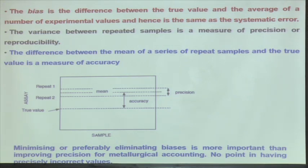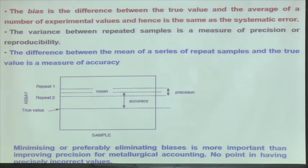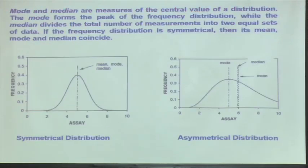Minimizing or preferably eliminating biases is more important than improving precision for metallurgical accounting. There is no point in having precisely incorrect values. So how do I remove biases? That is the challenge and that is what we try to discuss in this lecture through the sampling methods.